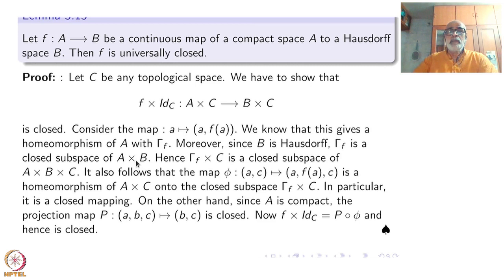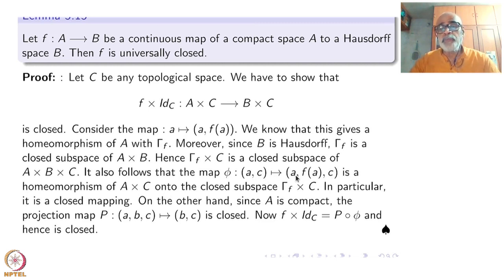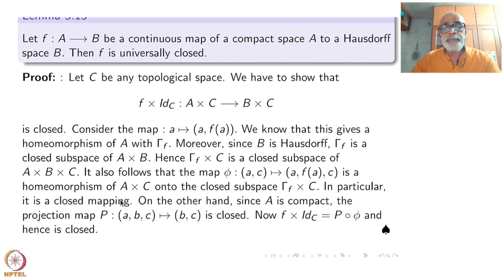Hence gamma-f cross C is a closed subset of A cross B cross C. The map from A cross C to (a, f(a), c) — where the second factor is identity — is a homeomorphism onto the closed subset gamma-f cross C. In particular, it is a closed mapping. Since a homeomorphism is continuous, open, and closed, it is a closed mapping from A cross C to gamma-f cross C.